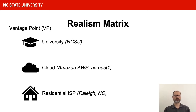A concern that arises here is that US East 1 is not physically located in the same place as NCSU in Raleigh, North Carolina. Fortunately, our results seem clear enough that we don't need to be worried about confounding factors in geotargeting, but I'll say more on that later.